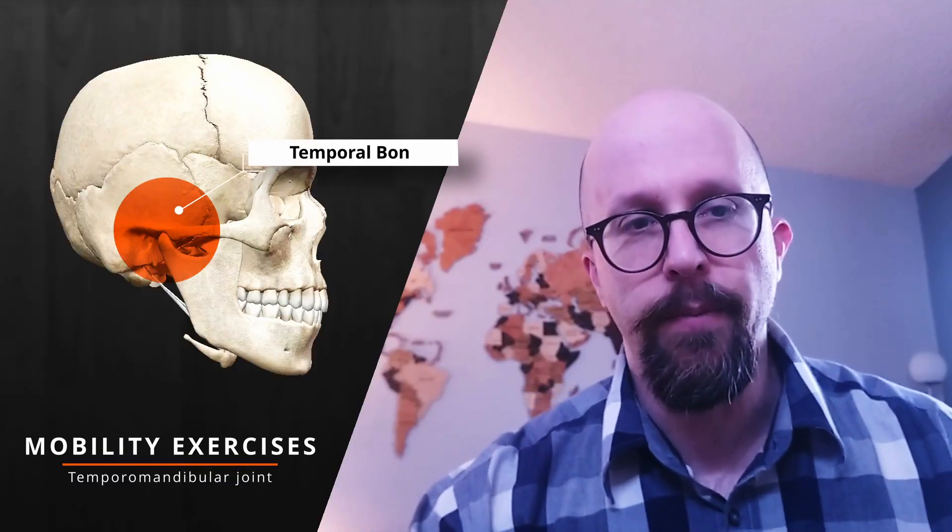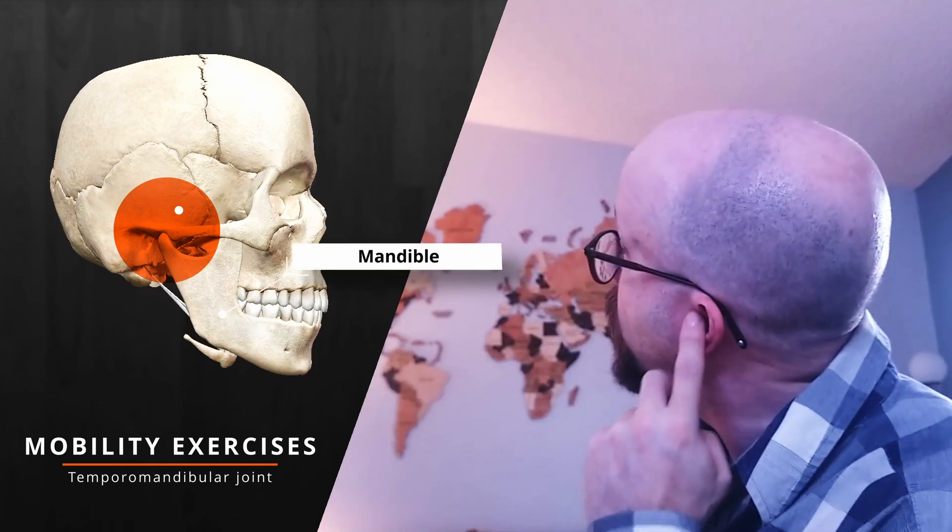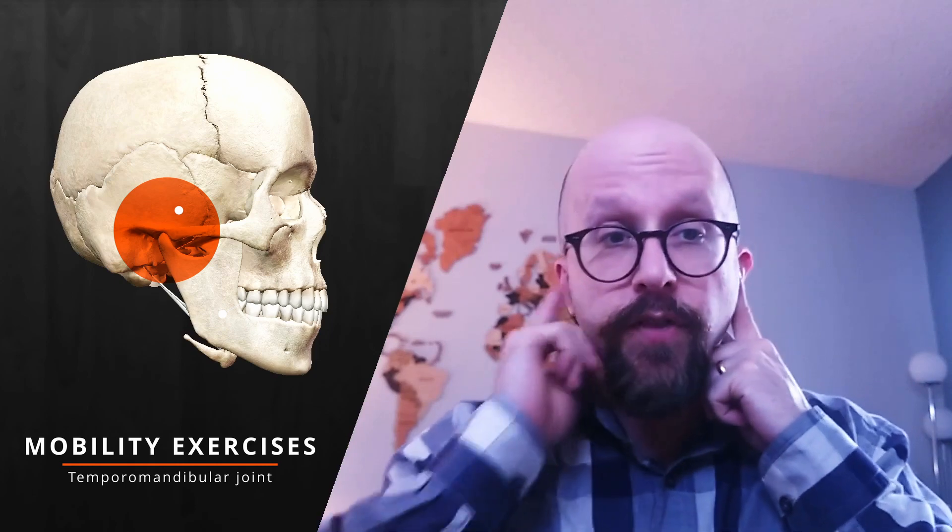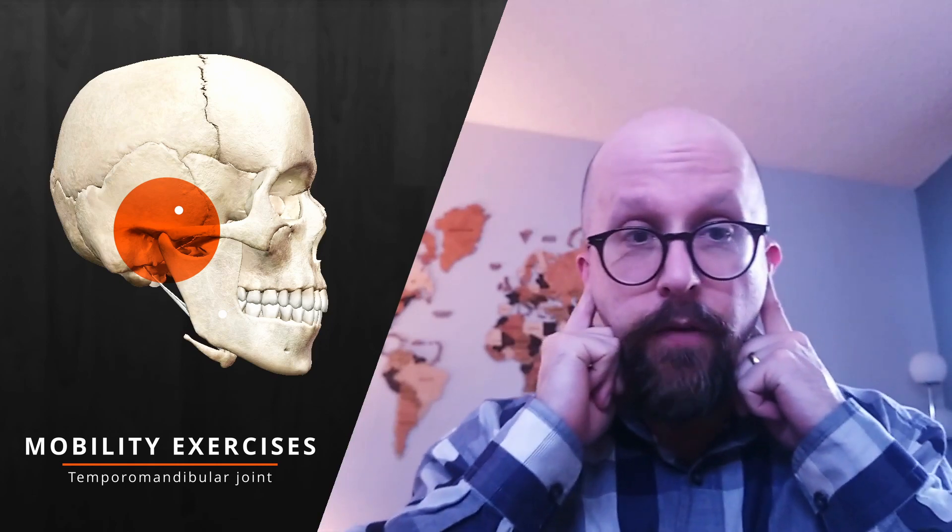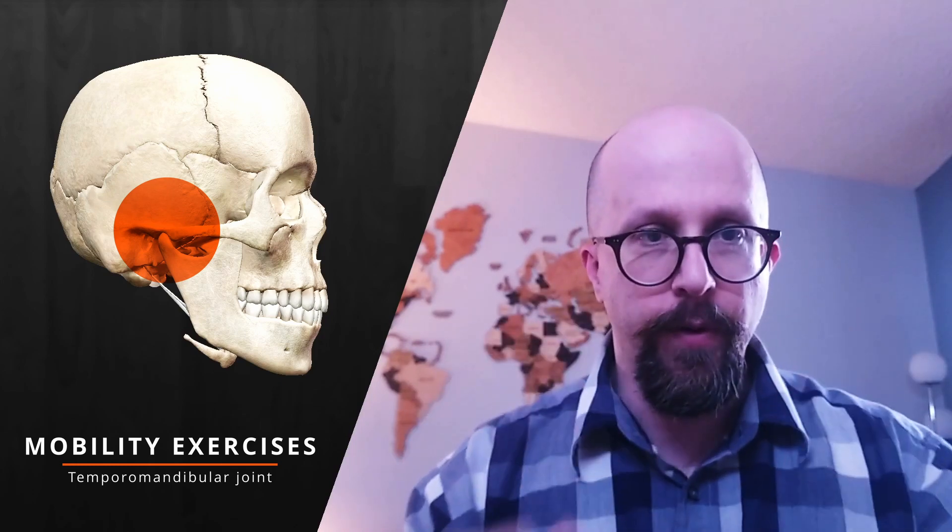So here we have our TMJ. To find this joint, find the tragus on your ear and just place your fingers in front of it. If you open and close your jaw, you will feel that joint slide forward away from your fingers.